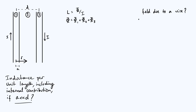Applying Ampere's law when R is greater than A — outside the wire — the μ₀ times current enclosed term is just μ₀I, because circulating all the way around the wire encloses the entire current. That equals the line integral of the magnetic field, and by symmetry the field is constant along a circular path, giving 2πR times B. Therefore the flux density B = μ₀I / 2πR.